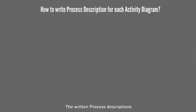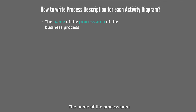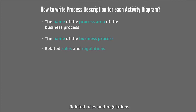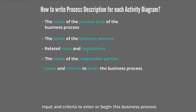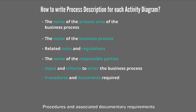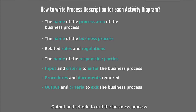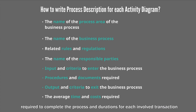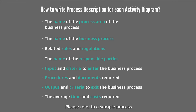The written process description must include the following elements: the name of the process area to which the business process belongs, the name of the process, related rules and regulations, name of responsible parties, input and criteria to enter or begin the business process, procedures and associated documentary requirements to complete the process, output and criteria to exit the business process, and the average time and cost required to complete the process and duration for each involved transaction. Please refer to a sample process description from the UN/CEFACT BPA guide for further details.